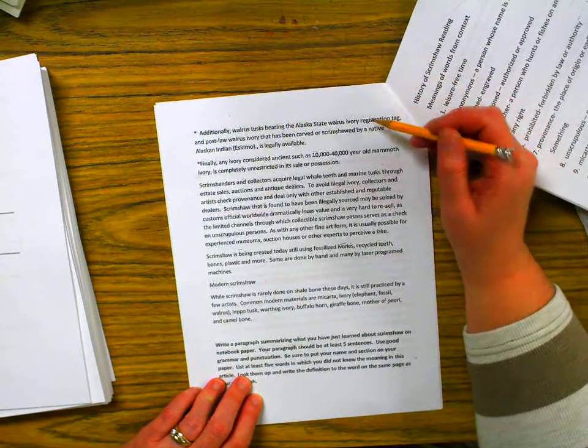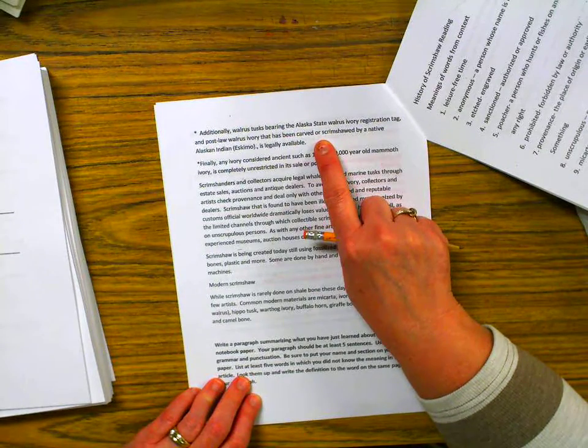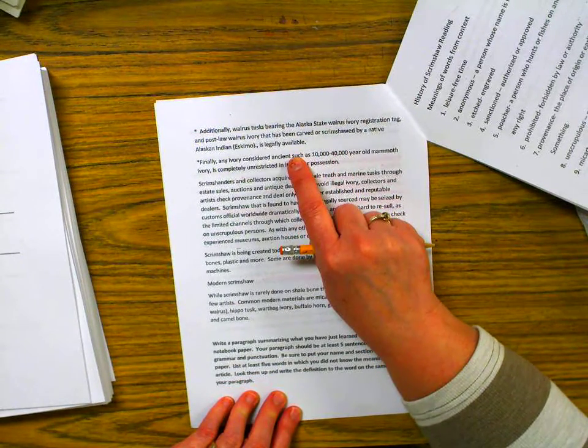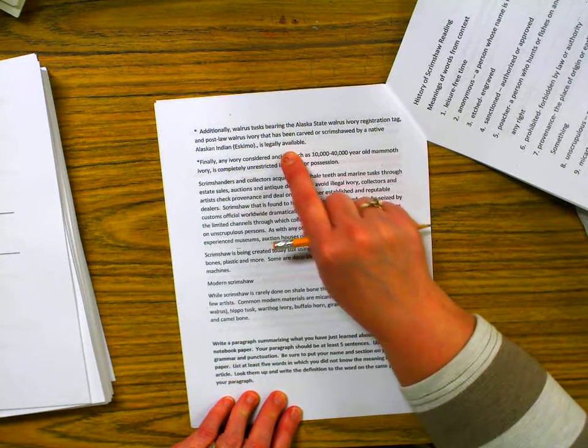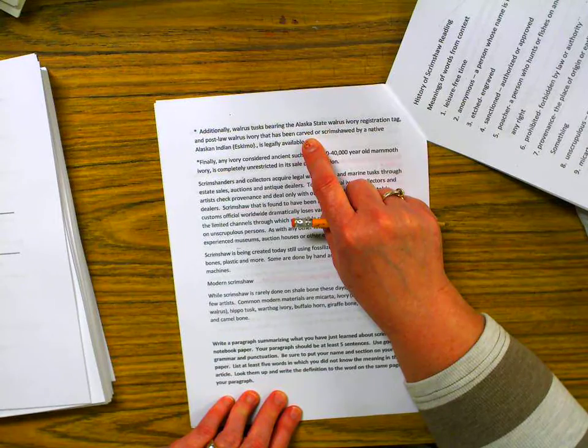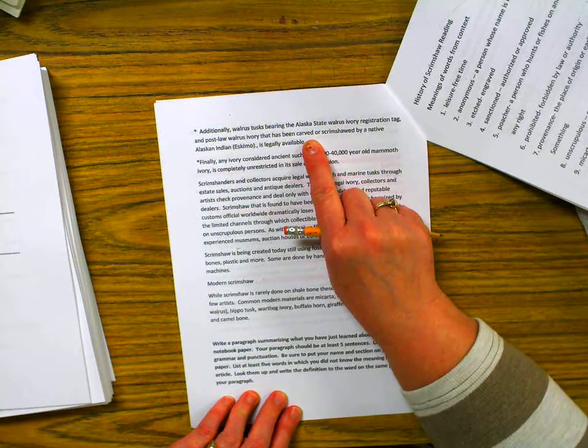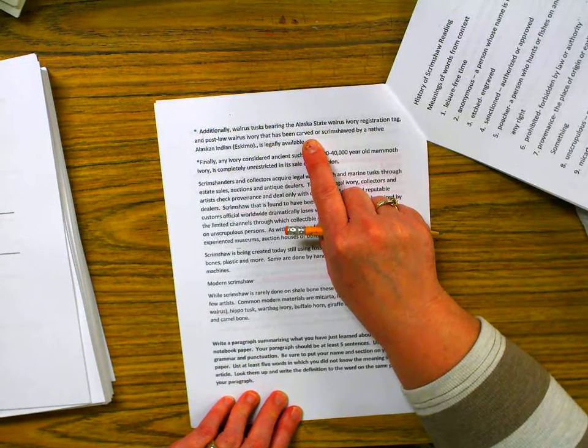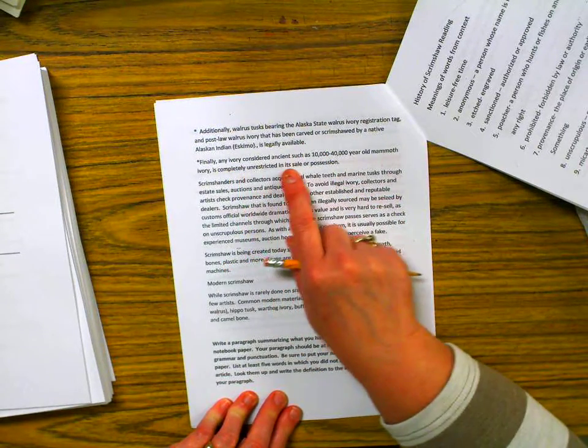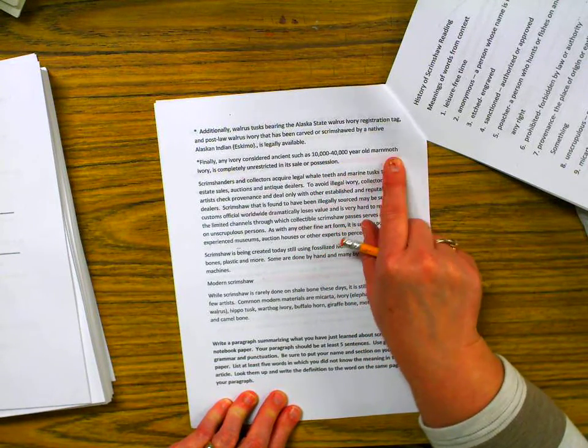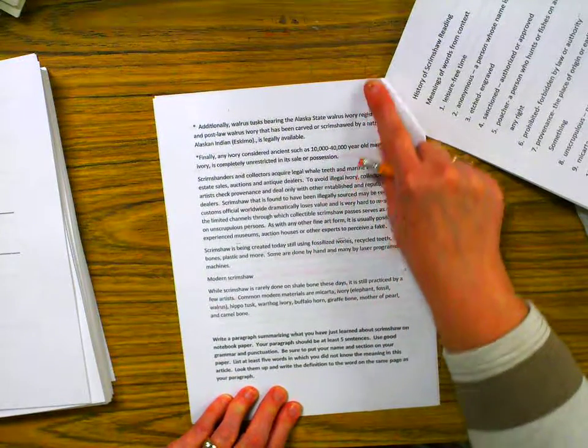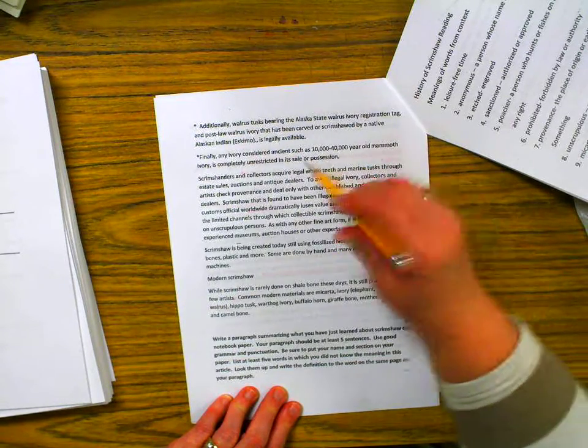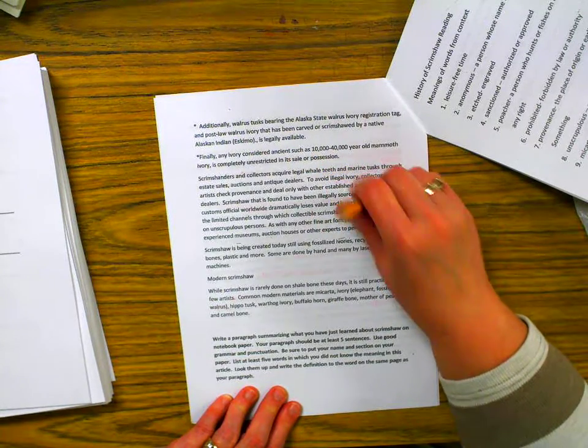Additionally, walrus tusks bearing the Alaska State walrus ivory registration tag and post-law walrus ivory that has been carved or scrimshawed by a native Alaskan Indian, which we call Eskimos, is legally available. Eskimos still kill whales, and they're allowed to under some agreement because they use it to live. I think there's a limit to how many, but they are allowed to kill them. Finally, any ivory considered ancient, such as 10,000 to 40,000 year old mammoth ivory, is completely unrestricted in its sale or possession. So anything that's old can be sold and resold without any worry of being arrested. If it's past these dates, the 1976 and the 1989 dates, then it's illegal.